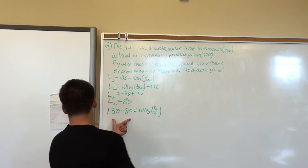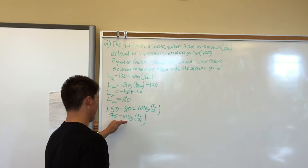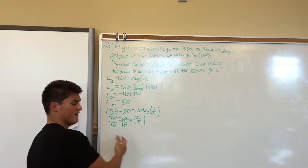First we're going to subtract, which gives us 70, so it becomes 70 equals 10 log I2 over I1. From there we're going to divide out the 10. By doing that, the 10 cancels out. We divide this side by 10, and that becomes 70 divided by 10, which is 7.